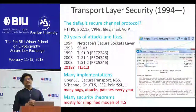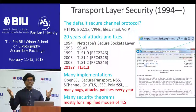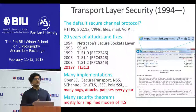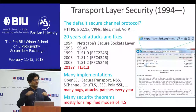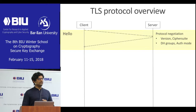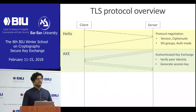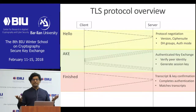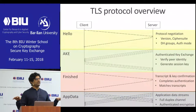The protocol at the level we want to consider consists of four phases. First, a negotiation phase called hello, where client and server negotiate parameters. Then they run the authenticated key exchange — we'll focus mostly on this middle part. Then a key confirmation step called finished, and finally, once they have the keys, they exchange data using authenticated encryption, also called the record layer. The negotiation phase, though the most boring, has actually probably resulted in more realistic attacks on the protocol than many other features.